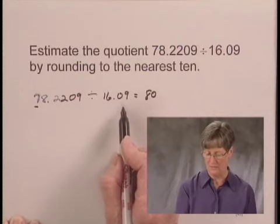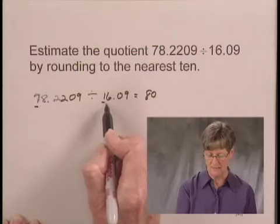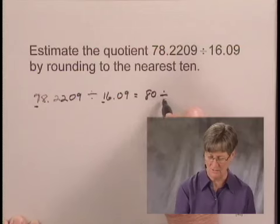When I round 16.09 to the nearest 10, I have 1 in the tens place. The next digit to the right, 6, is 5 or higher, so I round up again. I round 16.09 to 20.